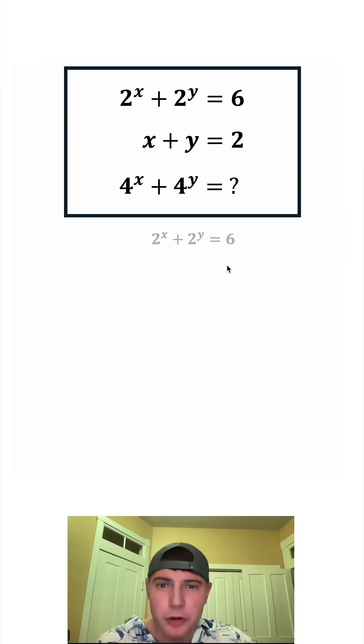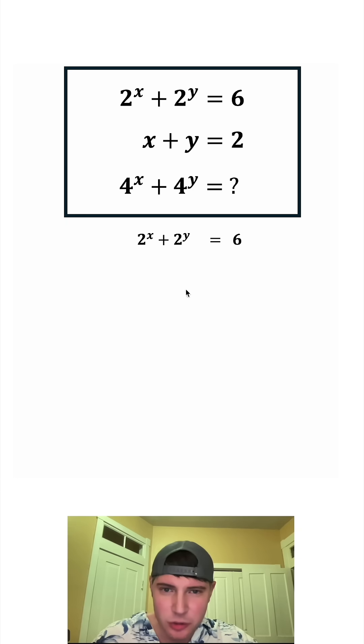First, let's copy down this top row. 2 to the x plus 2 to the y equals 6. And let's square both sides of the equation. On the left-hand side, this thing squared is equal to this thing times itself. And then on the right-hand side, 6 squared is 36.